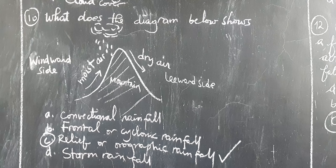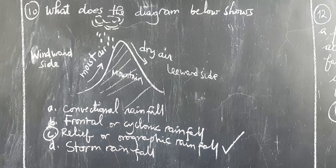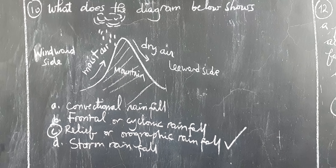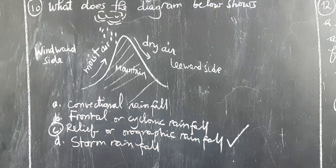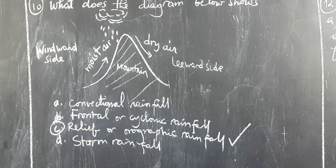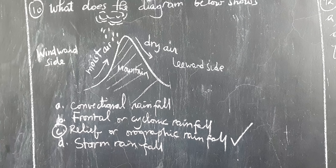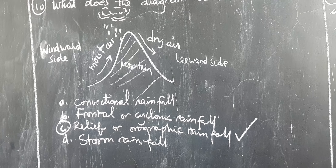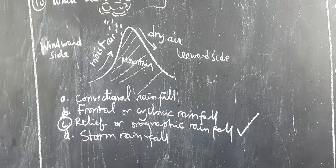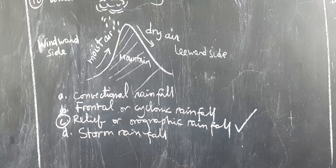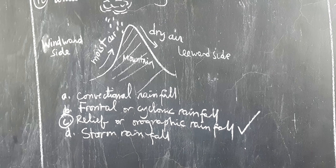We move on to question number ten: What does the diagram below show us? They give us a diagram, and we are going to observe it carefully to answer the question. This diagram is indicating one of the types of rainfall. Remember that there are three main types of rainfall: convectional rainfall, and cyclonic rainfall. The options are: A. Convectional rainfall, B. Frontal cyclonic rainfall, C. Relief rainfall, D. Storm rainfall.